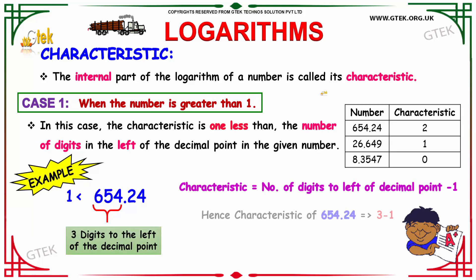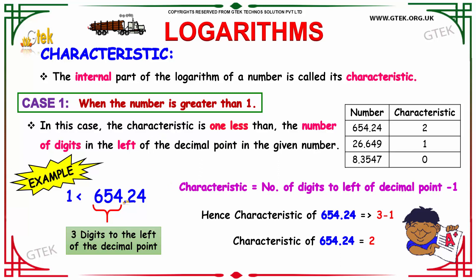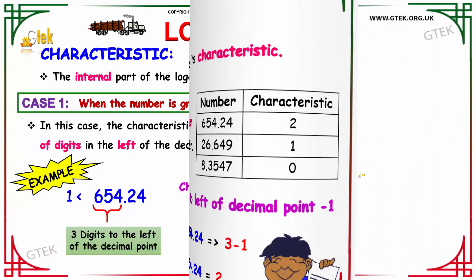To find the characteristic, we have two cases. The first case: when a number is greater than 1, the characteristic is one less than the number of digits to the left of the decimal point. For example, the number 654.24 has 3 digits to the left of the decimal point. Hence, the characteristic is the number of digits to the left of the decimal point minus 1, that is 3 minus 1. Hence, the characteristic of 654.24 is 2.